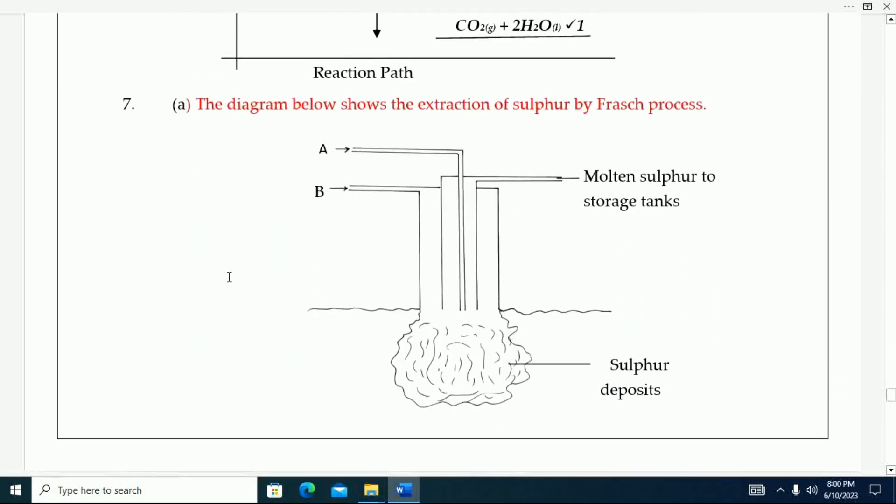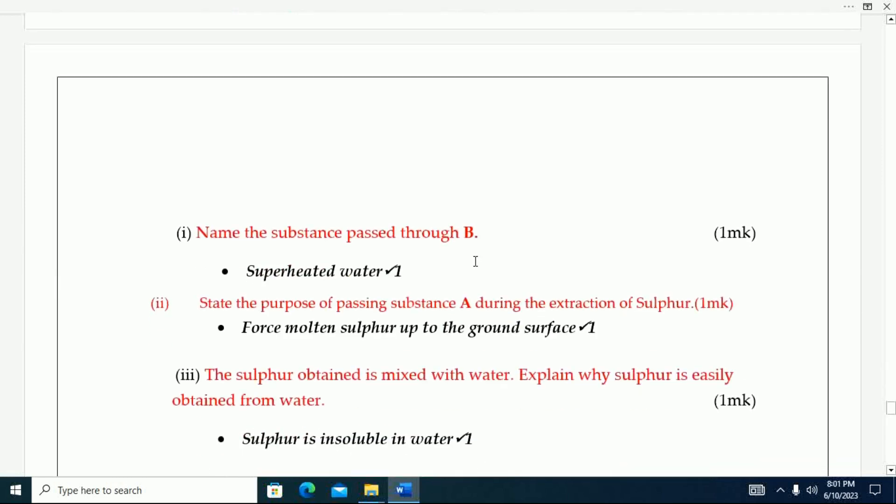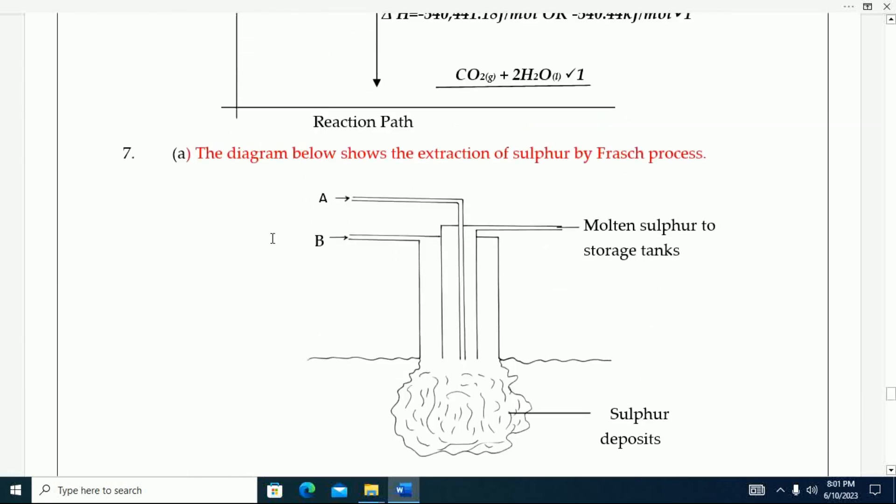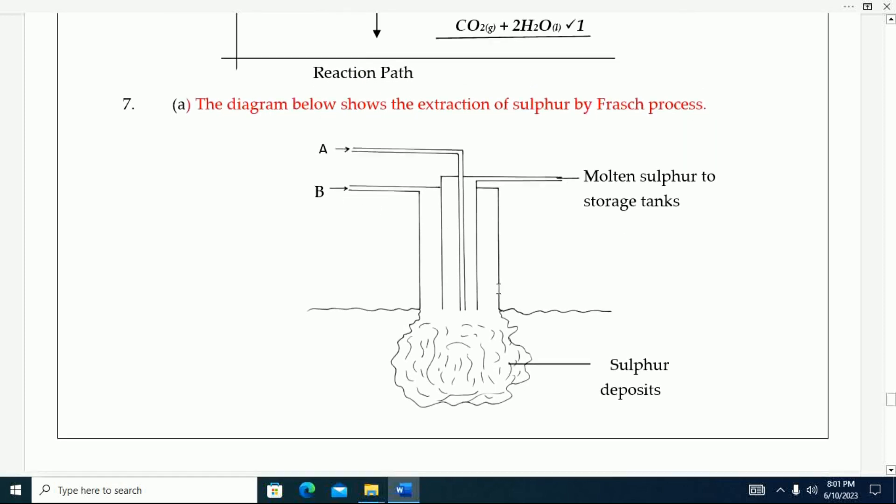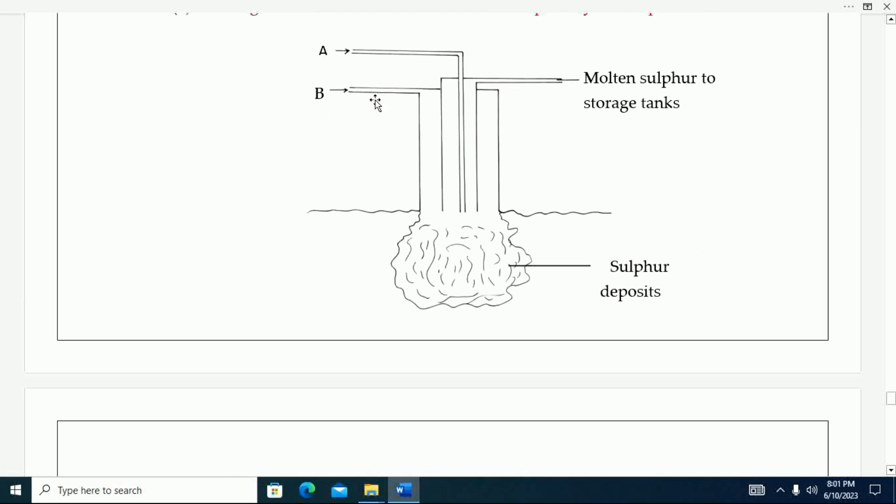Number seven: The diagram below shows the extraction of sulfur by Frasch process. You can see molten sulfur to storage tank, sulfur deposits. You are told the name of the substance passed through B. That is superheated water.